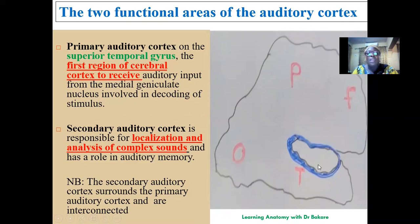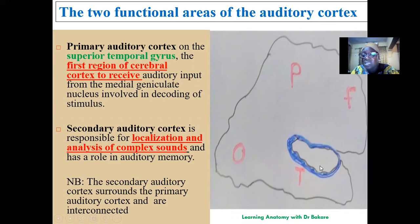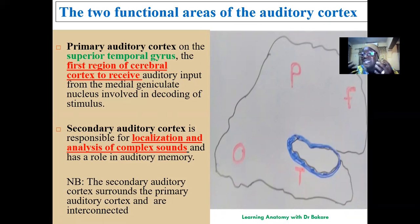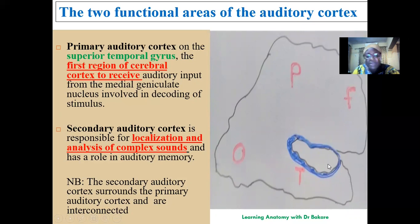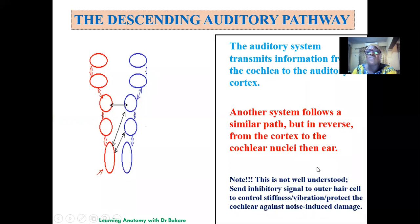The auditory cortex is located in the temporal lobe. Specifically, the primary auditory cortex is on the superior temporal gyrus — gyri being the elevations and sulci being the indentations of the cortical surface. This is where the final termination of the auditory pathway occurs and where sound is interpreted. We also have a secondary auditory cortex surrounding the primary auditory cortex, which is responsible for localization of sound and analysis of complex sounds — detecting whether a sound is coming from a near or far place.